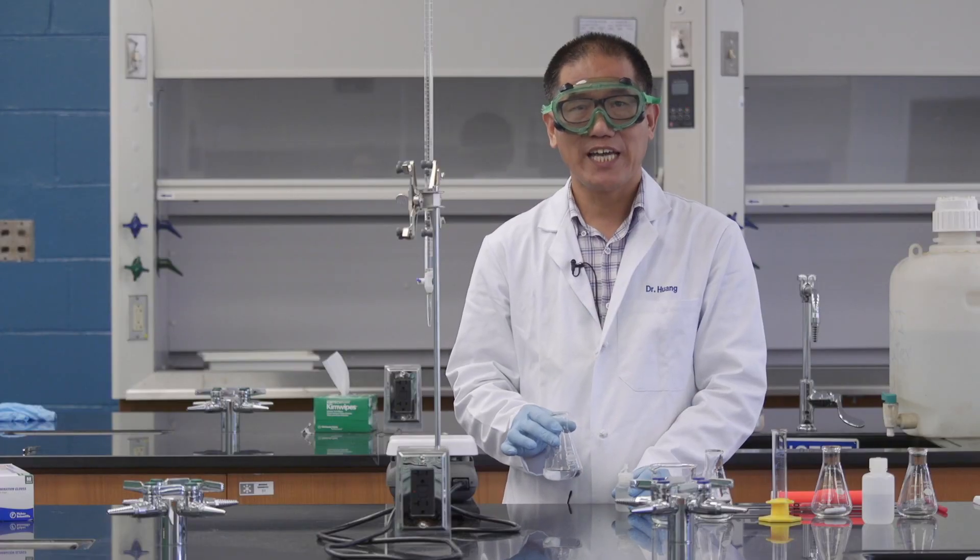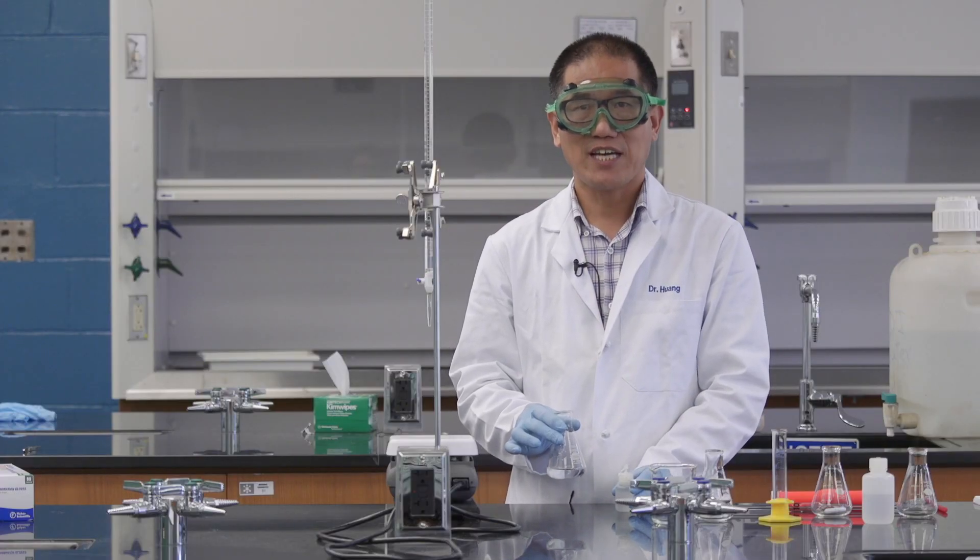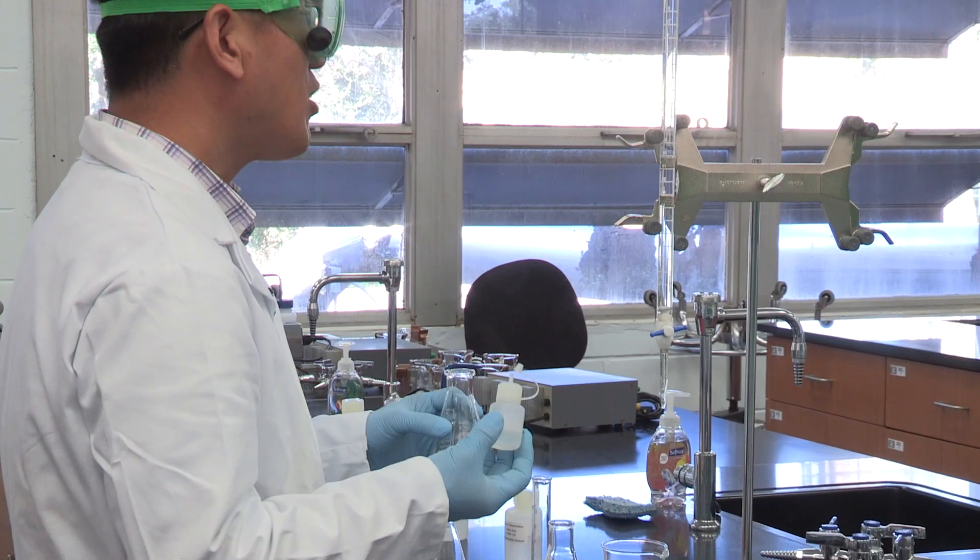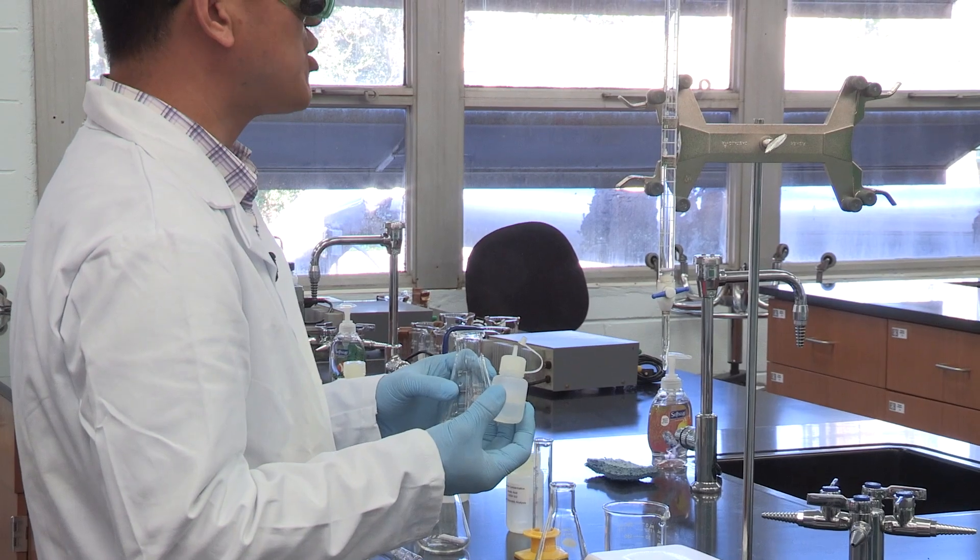After you dissolve the KHP, don't forget to add the acid-base indicator, which is in this small bottle. You only need to add about three to five drops.